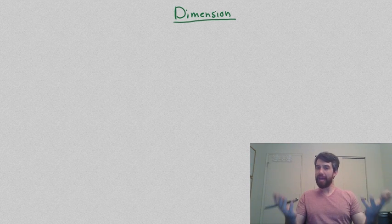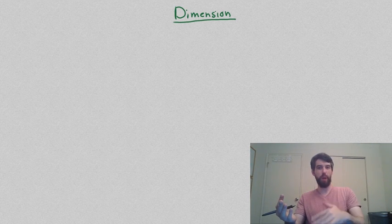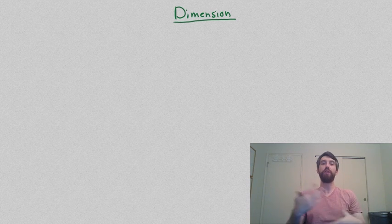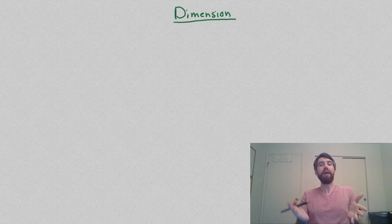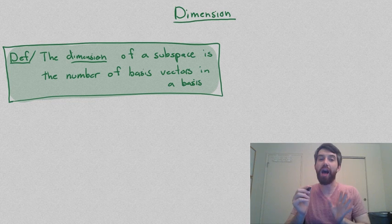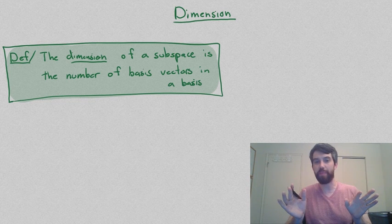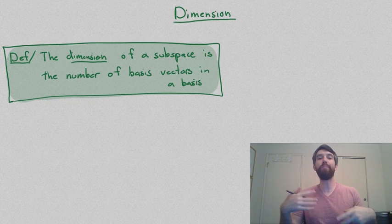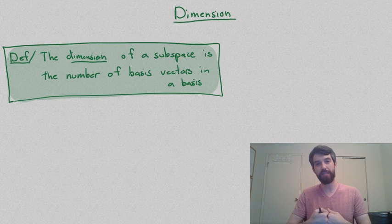So what I'm getting at is the idea of number of components of a vector, which is sort of how we've previously perhaps thought of dimension, can be translated into the idea of how many different basis vectors do you have? Indeed, we are going to define the dimension of a subspace as being the number of basis vectors inside of the basis.